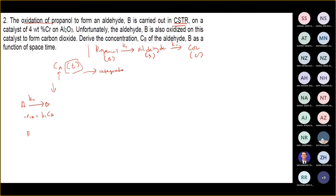And then we have another reaction, B to C with K2. What is the equation for the rate of reaction? K2, and then? CB. Yes, correct. So K1·CA and K2·CB. Thank you very much.